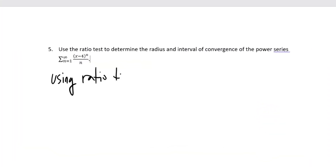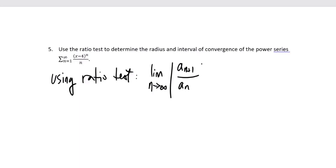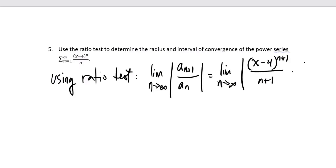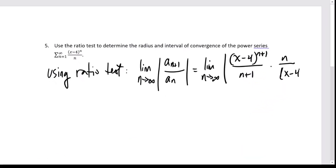For this last problem: use the ratio test to determine the radius and interval of convergence of the given power series, which is the sum from 1 to infinity of x minus 4 to the power n over n. We use the ratio test a lot for power series because the powers simplify nicely. The ratio test takes the limit to infinity of the absolute value of the n plus 1 term divided by the nth term. Here's the n plus 1 term, and multiplying by the reciprocal of the nth term gives us an n power to simplify.